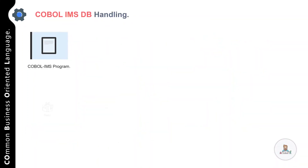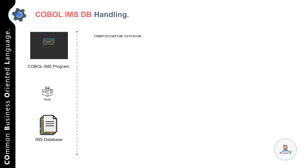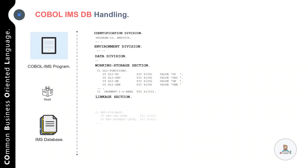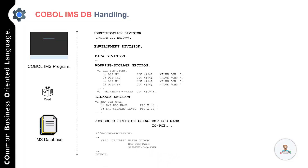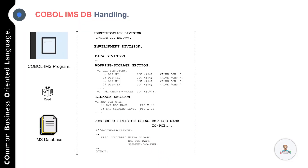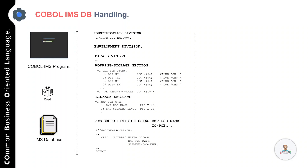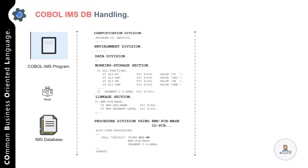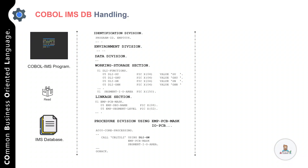Now let's talk about our last example — a COBOL IMS program — and understand how to specify the different file entries. Again we have four divisions: identification division, environment division, data division, and procedure division. We are not required to specify any file-related details in the environment division or data division because this program deals with an IMS database, which is a hierarchical database.